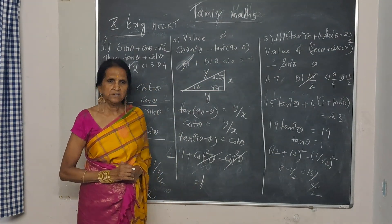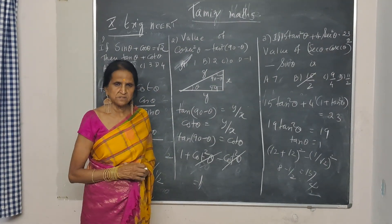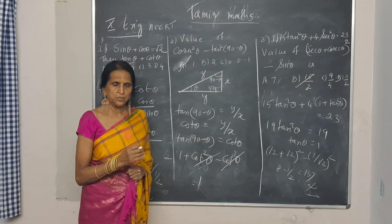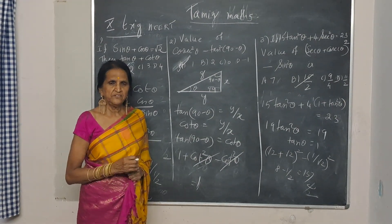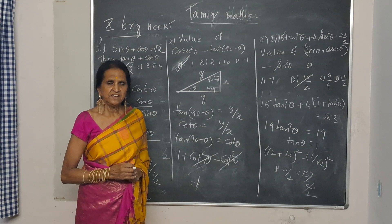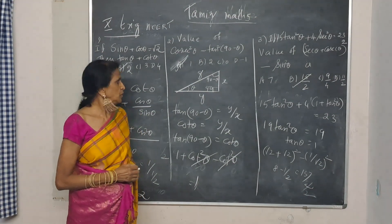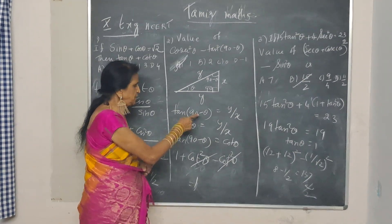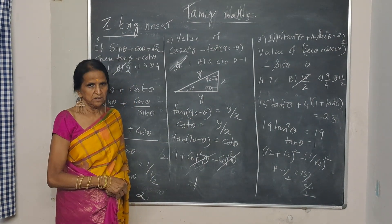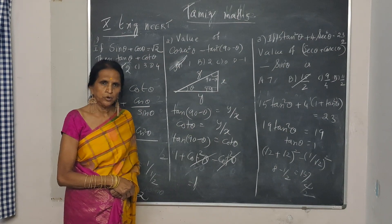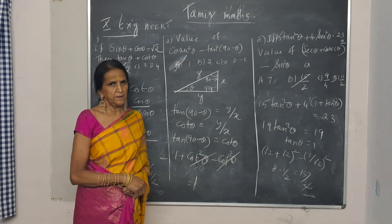The most important thing which you should remember in today's class is tan 45 is 1, sin 45 is 1 by root 2, secant 45 is root 2, cosecant 45 is root 2. And then tan 90 minus theta is cot theta. So, practice all this before we could meet in the next video. Till then, bye.